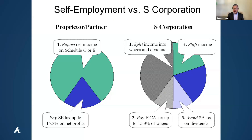So far there's never been an audit because of too small a reasonable salary, so you can go aggressive. Let's say on a hundred thousand dollars you pay yourself ten thousand dollar salary — ten thousand dollars times fifteen percent is one thousand five hundred dollars. You save thirteen thousand five hundred dollars.